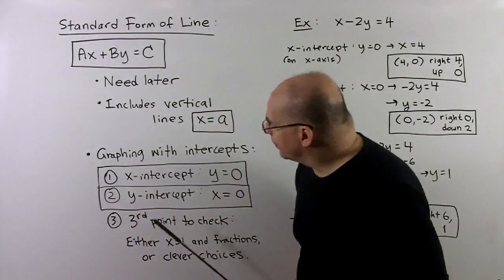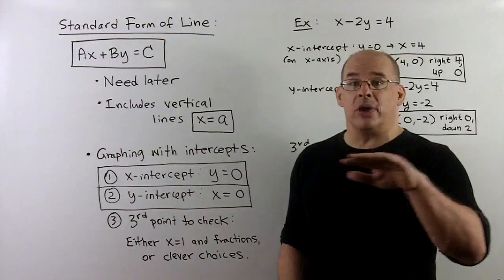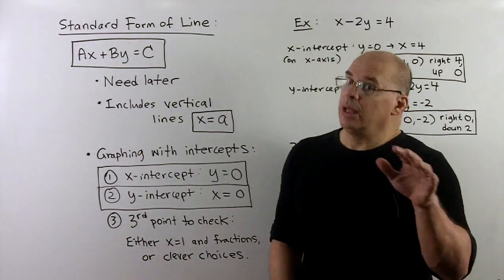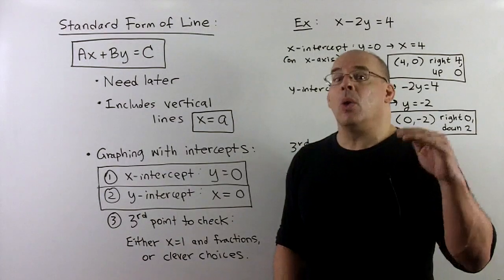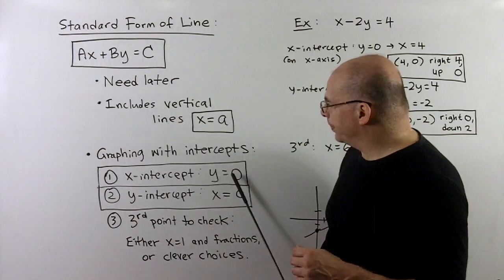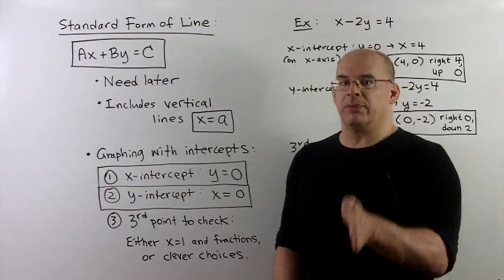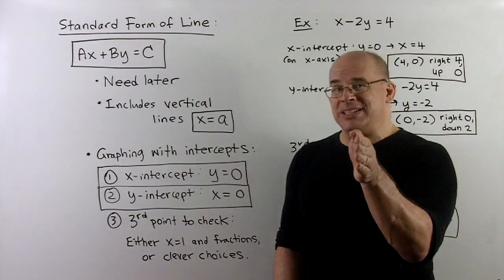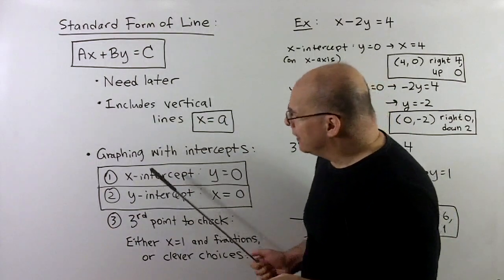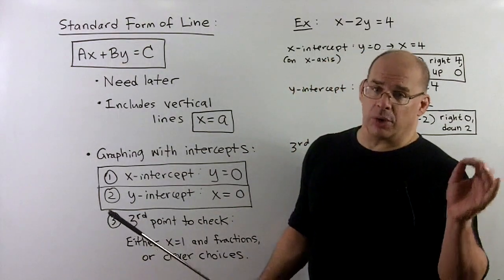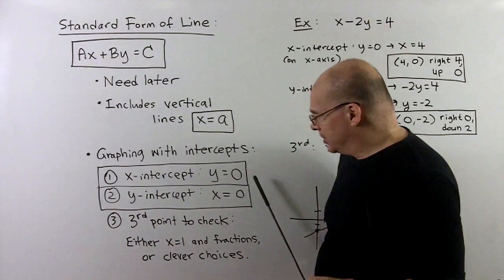For definitions: the x-intercepts are those points on the x-axis, meaning height zero, so we set y equal to zero. For the y-intercept — the axis is vertical — we have no left or right, which means x equals zero. To find either intercept, set the opposite variable equal to zero.